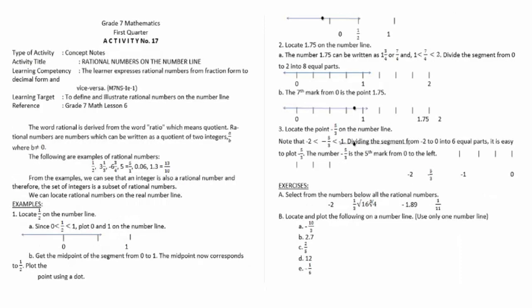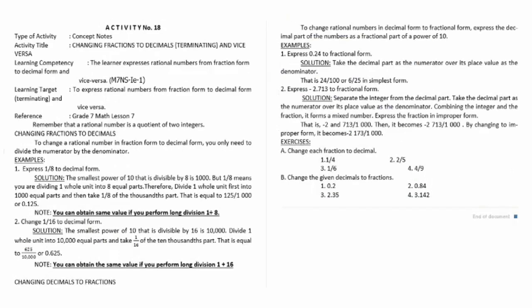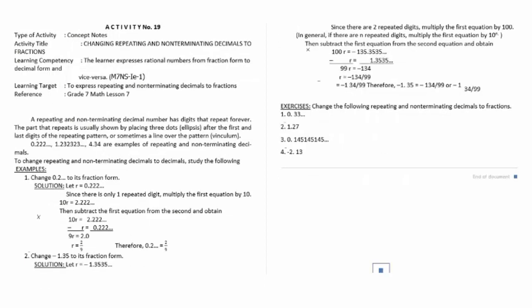Activity number seventeen is rational numbers on the number line. Activity number eighteen is changing fractions to decimals — terminating and non-terminating — and vice versa. Activity number nineteen is changing repeating and non-terminating decimals to fractions.